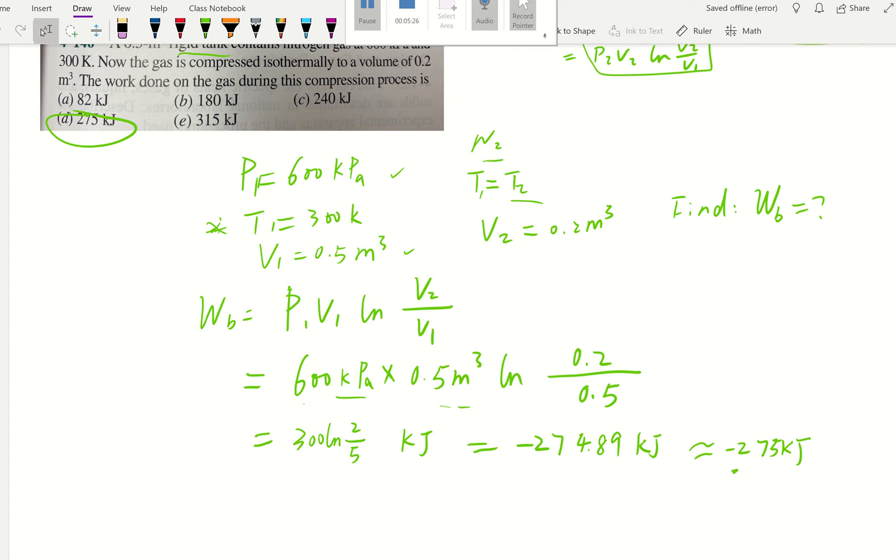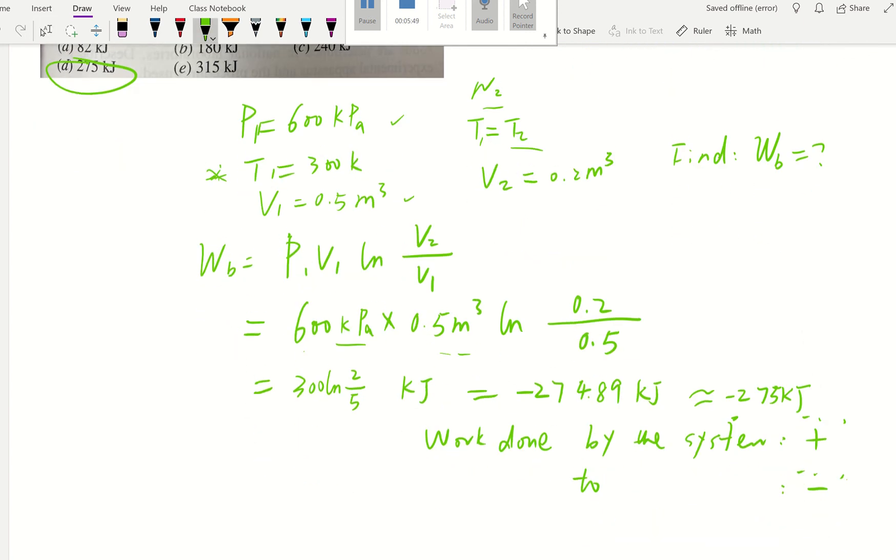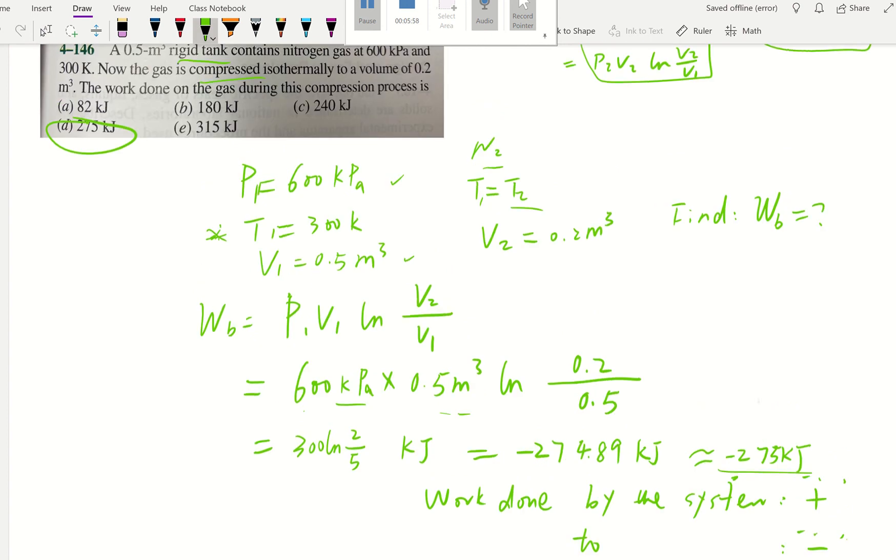Remember, when we talk about first law equation, we talk about sign convention for boundary work. If the work is done by the system, that's going to be positive. If it's work done to the system, that's going to be negative. Since this is compression, that's work done to the system. It compresses the system, work done to the system. That'll be negative value. So we know it's going to be negative value. Here, they're just looking at the absolute value.